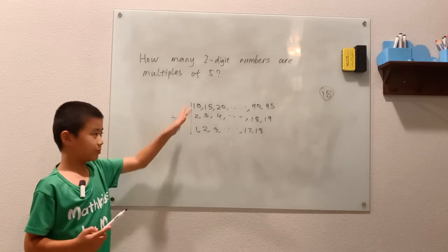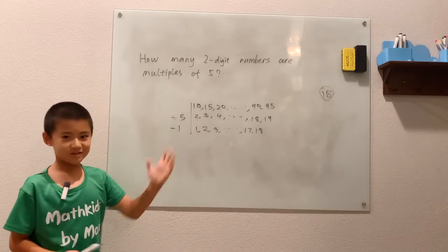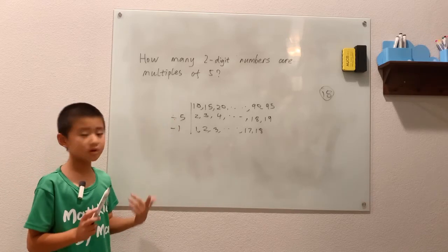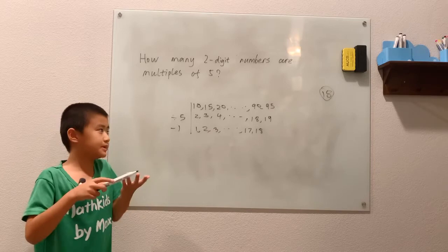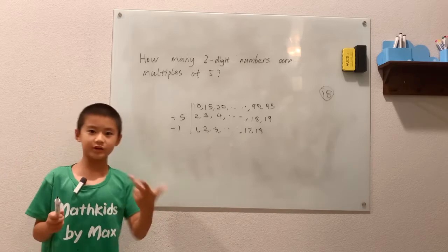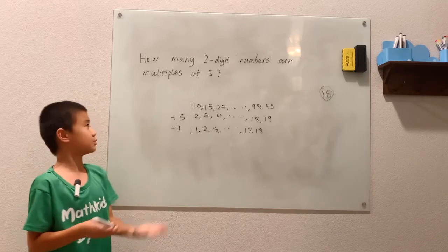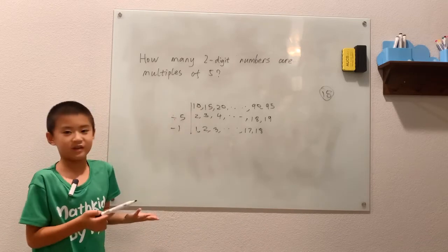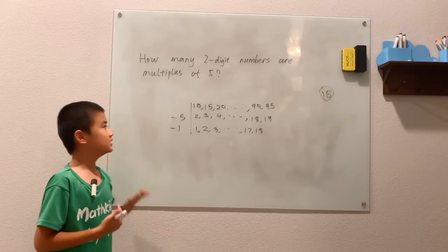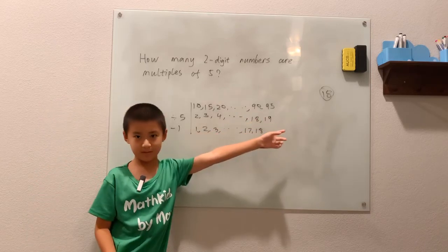Now if you're a beginner and you don't know any of this, you can just count. There aren't that many two-digit multiples of 5 — you can just go 10, 15, 20, 25, 30, 35 and keep going. It may seem tedious, but it works. There are only 18 numbers you have to count, so just keep track of them — fingers even work. There are many ways to count and solve this, but they all give the same answer: 18.